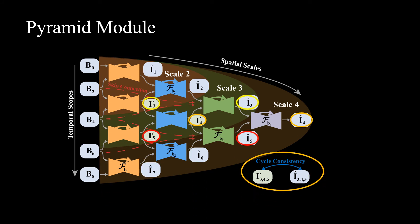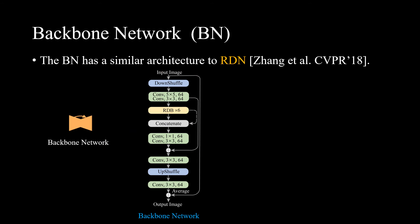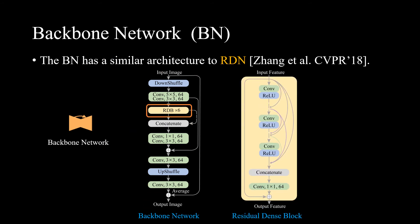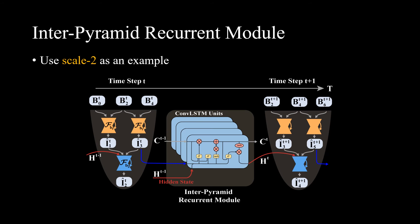When training, we use the cycle consistent loss to ensure the content consistency of the regenerated outputs. We use a variation of the residual dense network as the backbone network. The inter-pyramid recurrent module uses convolutional LSTM units to propagate the frame information across different pyramid modules. The inter-pyramid recurrent module can enforce temporal smoothness between output frames.